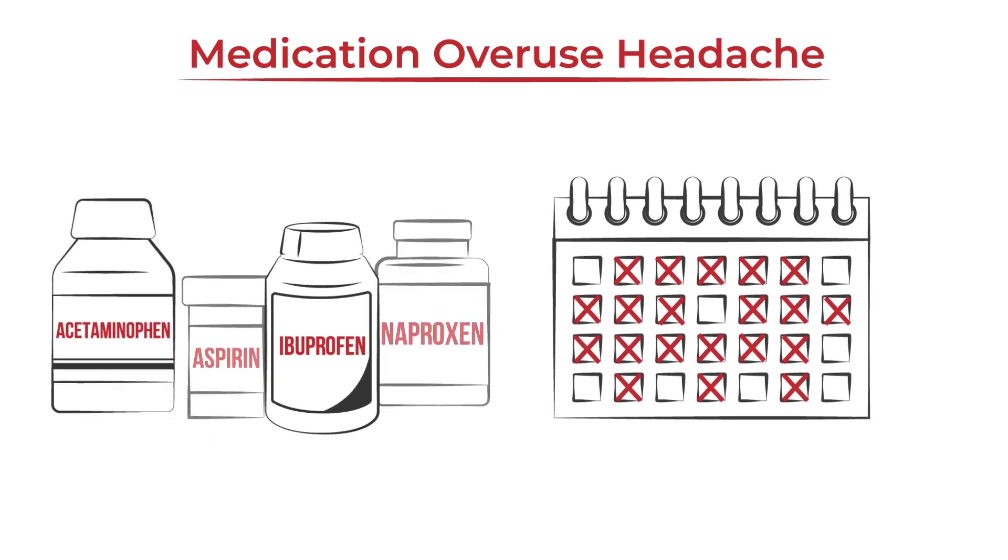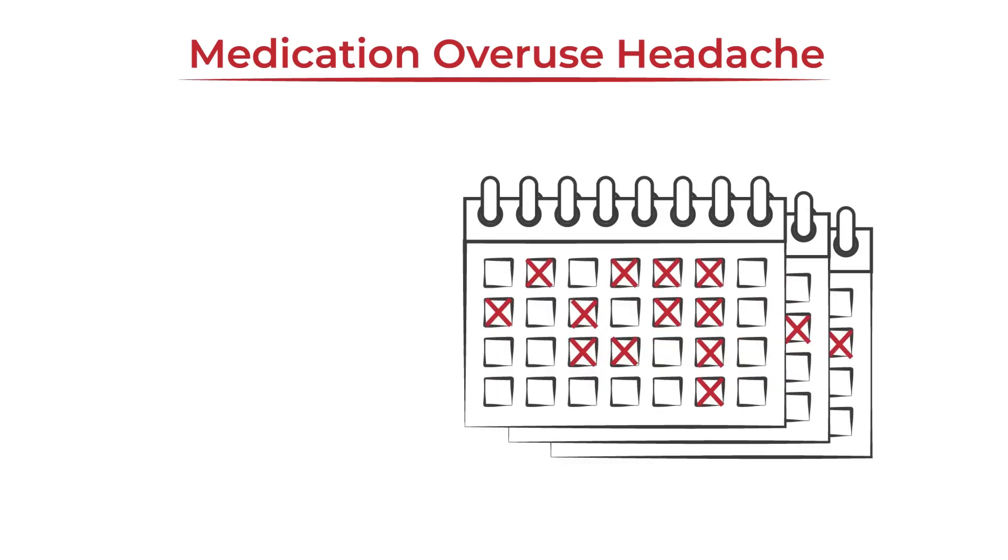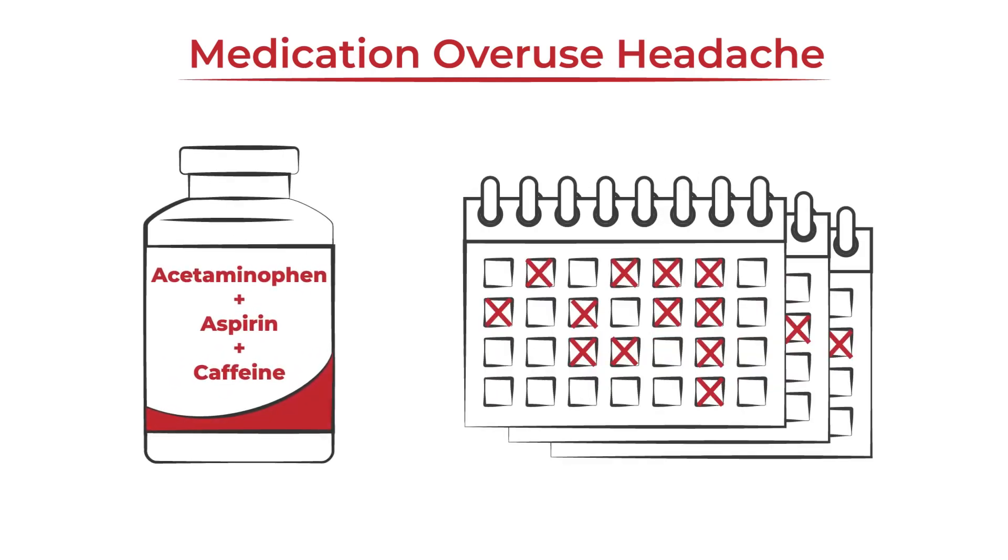This can occur when NSAIDs or acetaminophen are used 15 times or more per month for at least 3 months, and 10 times or more per month for at least 3 months for aspirin-acetaminophen caffeine combination medications.